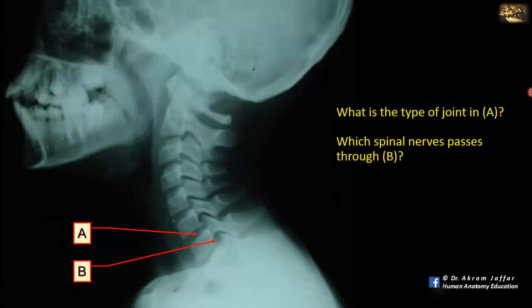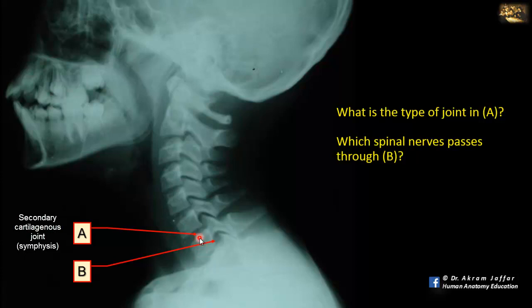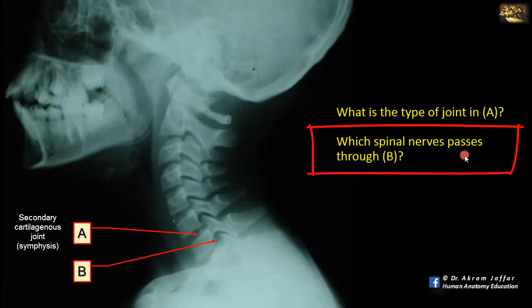What is the type of joint at A? These are cervical vertebrae in lateral view. The joint here is a secondary cartilaginous joint located between the bodies of vertebrae. There is an intervertebral disc in this space. Which spinal nerve passes through B?